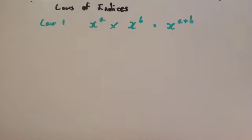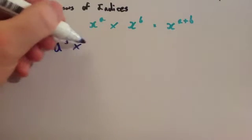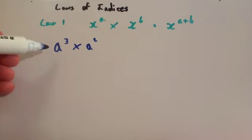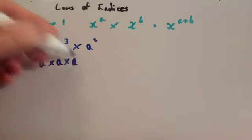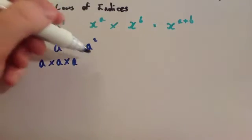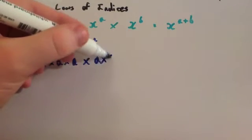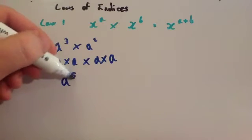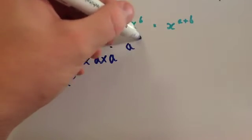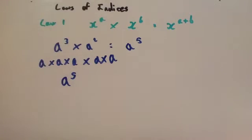Let's look at an example to see why that's the case. So if you had a to the power of 3, and you times it by a to the power of 2, well a cubed is a times a times a. And you're going to multiply that by a squared, which is a times a. So altogether you've got 5 a's, so that would be a to the power of 5. So when you multiply these together, you get a to the power of 5. And if you notice, if you do 3 plus 2, you get 5.